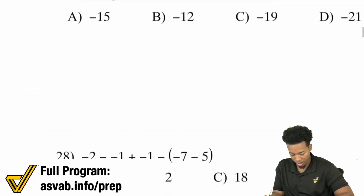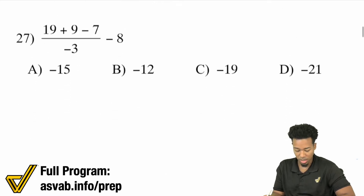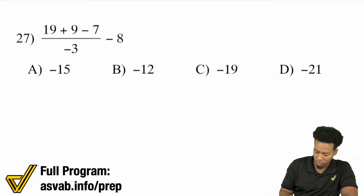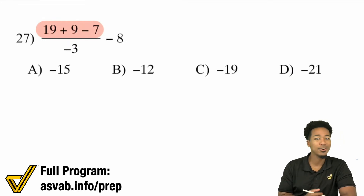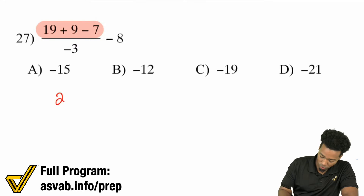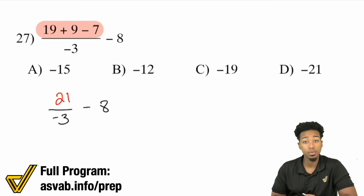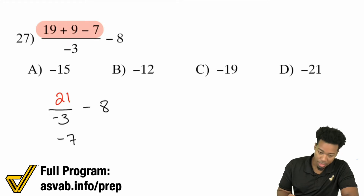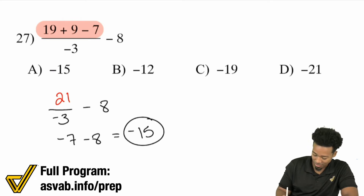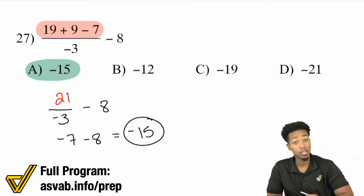Now we're looking at fraction bars. Remember, the numerator is its own group and the denominator is its own group. In the numerator: 19 plus 9 is 28, and 28 minus 7 is 21. So we have 21 divided by negative 3, all minus 8. 21 divided by 3 is 7, but positive divided by negative gives negative 7. Then negative 7 minus 8 — you're already negative going more negative — that's negative 15.